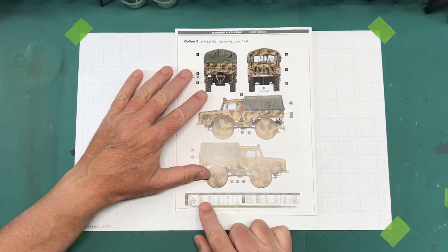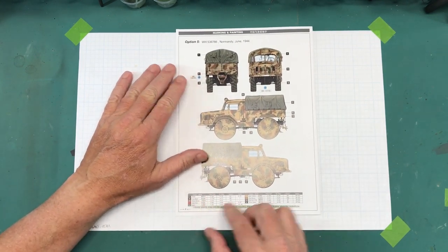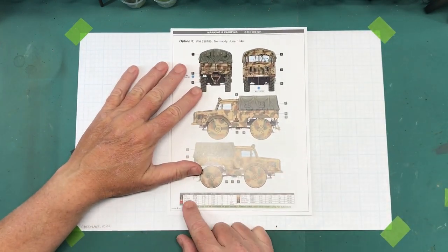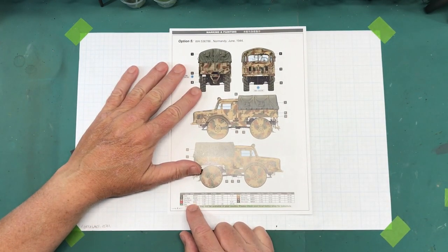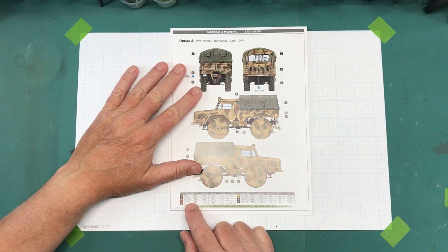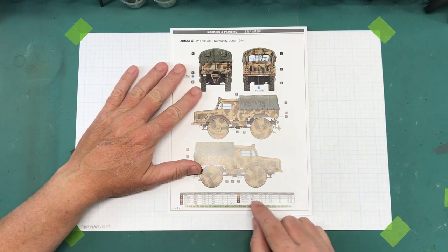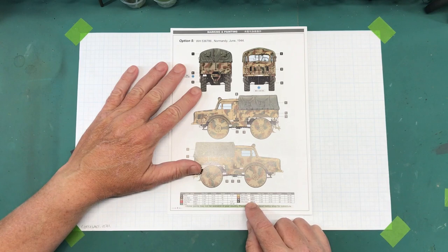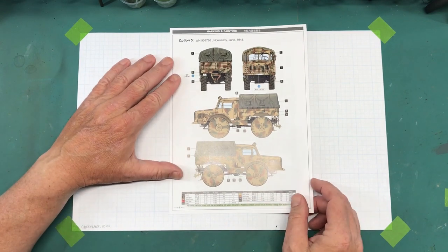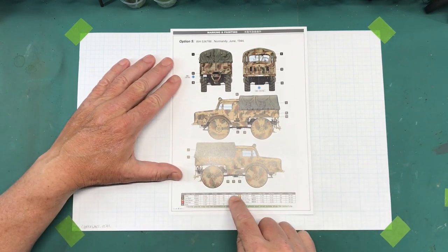And then down here is where we have our colors. There's basically nine colors: steel, tire black, wood brown, clear red, khaki, dark yellow, red brown, German gray, and olive green.